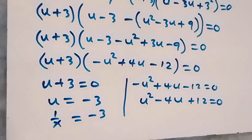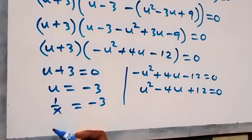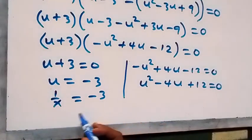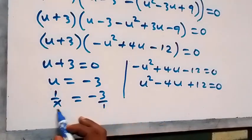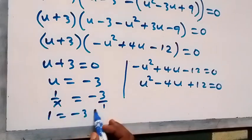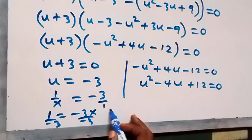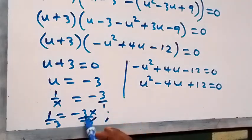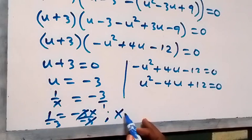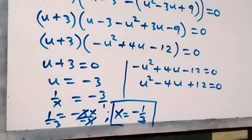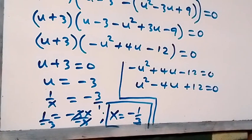Now recall that we represented u as 1 over x, so 1 over x equals minus 3. Taking the reciprocal on both sides, or cross-multiplying: 1 equals minus 3x, so dividing both sides by minus 3 gives x equals minus 1 over 3.